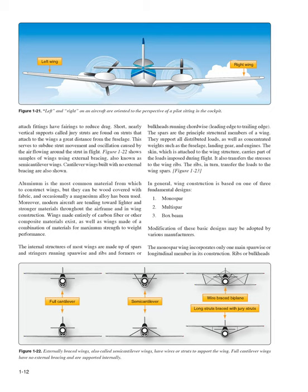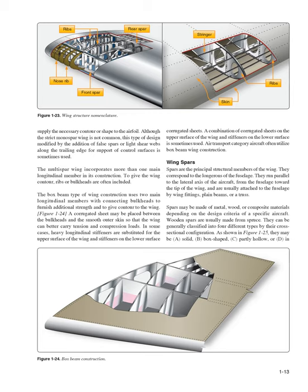The monospar wing incorporates only one main span-wise or longitudinal member in its construction; ribs or bulkheads supply the necessary contour or shape to the airfoil. Although the strict monospar wing is not common, this type of design modified by the addition of false spars or light shear webs along the trailing edge for support of control surfaces is sometimes used. The multispar wing incorporates more than one main longitudinal member. The box beam type of wing construction uses two main longitudinal members with connecting bulkheads to furnish additional strength and to give contour to the wing. Air transport category aircraft often utilize box beam wing construction.